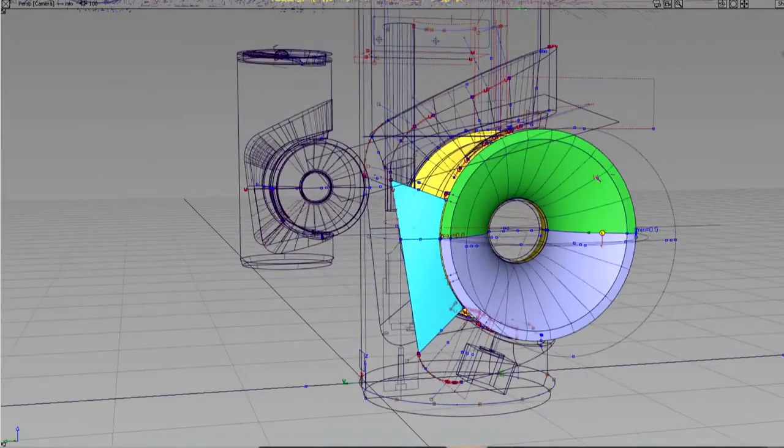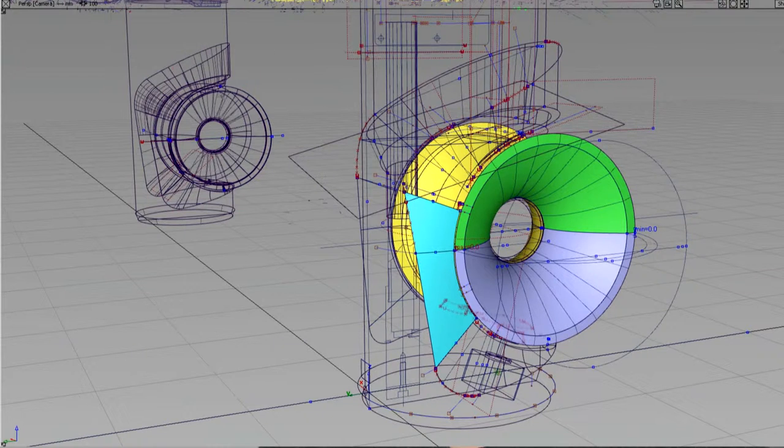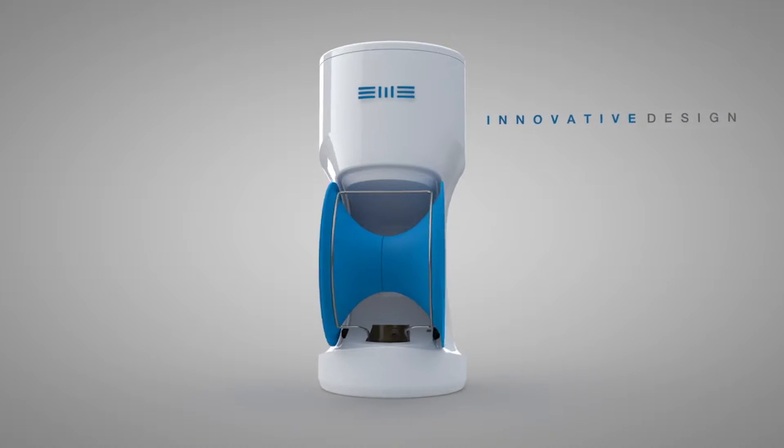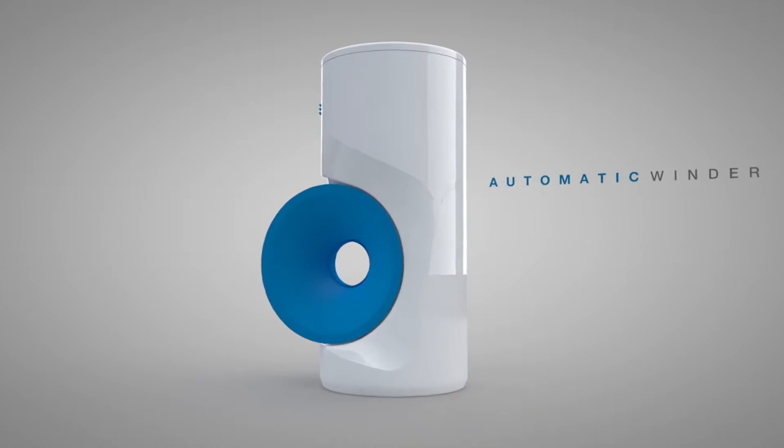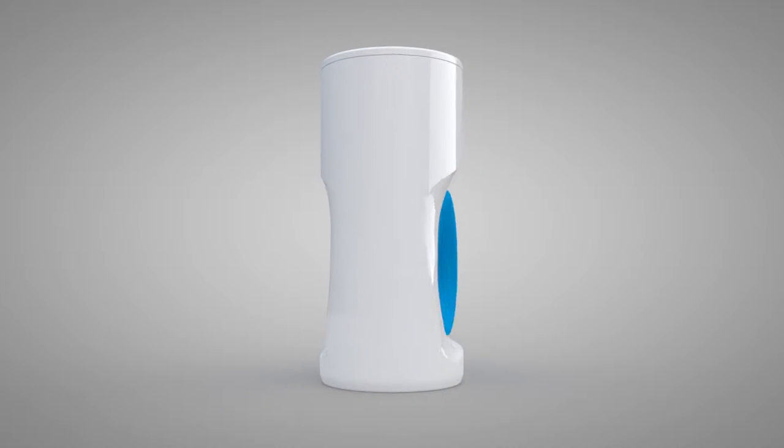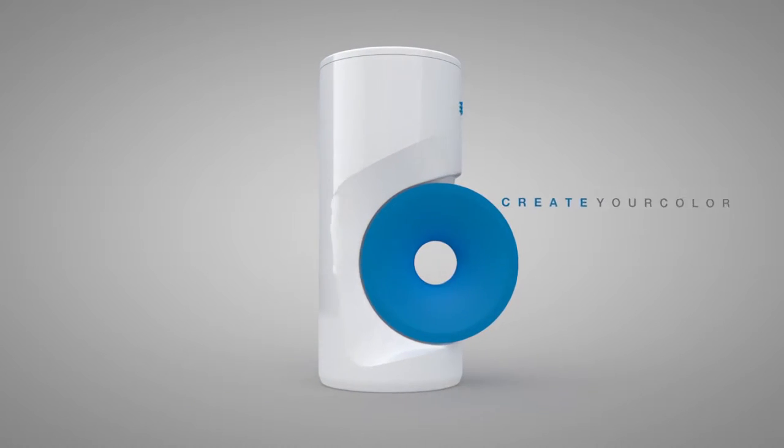We created the first filament extruder for the world of 3D printing made in Italy. EWI's filament extruder transforms plastic polymers into a filament that can then be used to create any object during the printing process.